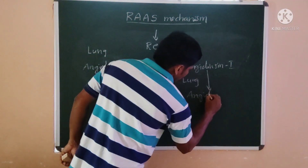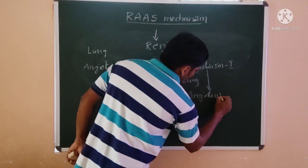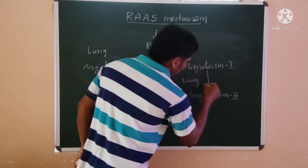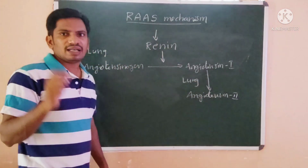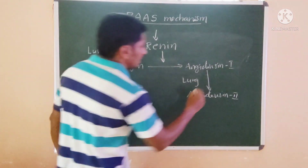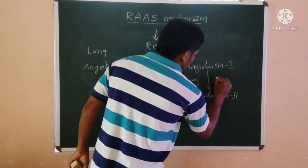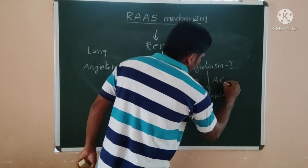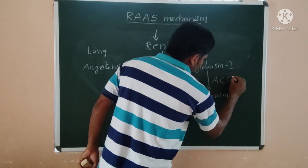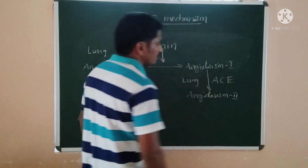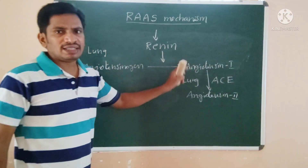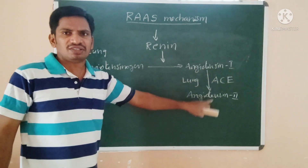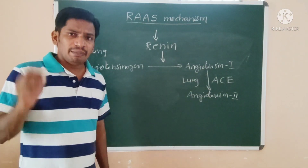Angiotensin 1 travels to the lungs, where ACE — angiotensin converting enzyme — is present. This enzyme carries out the conversion of angiotensin 1 into angiotensin 2.